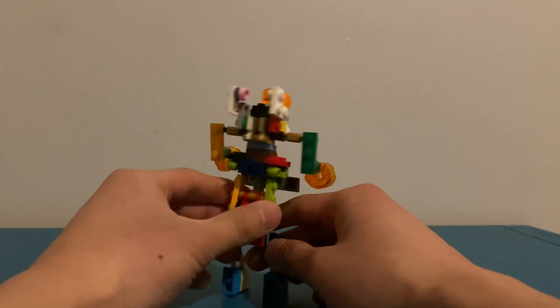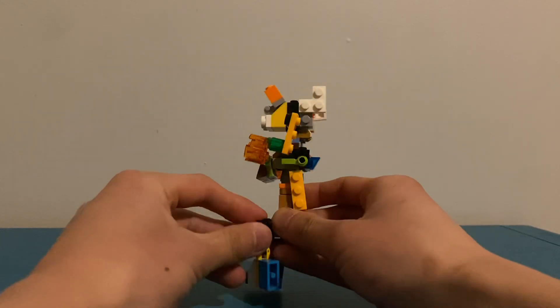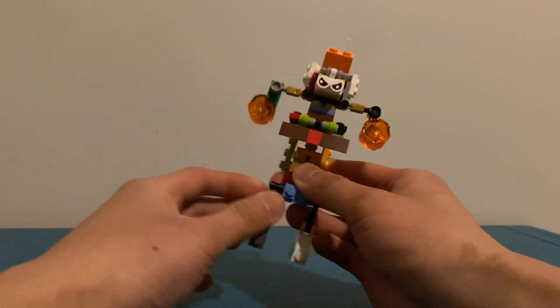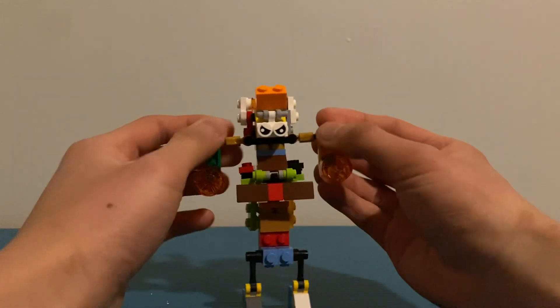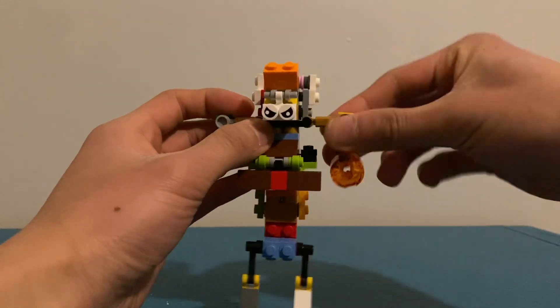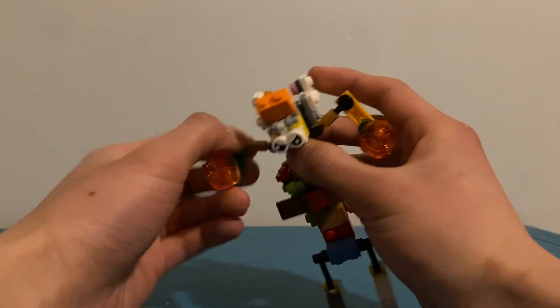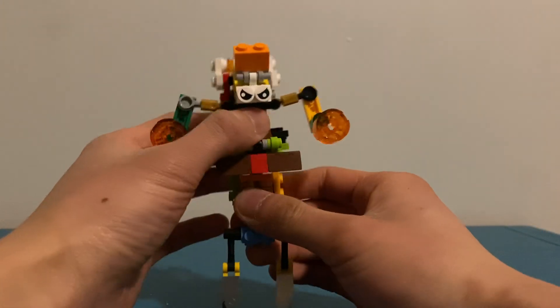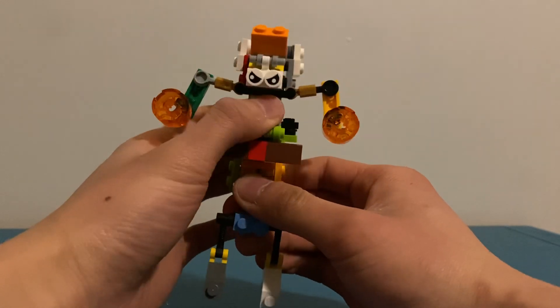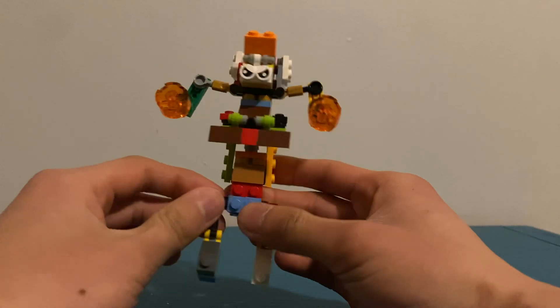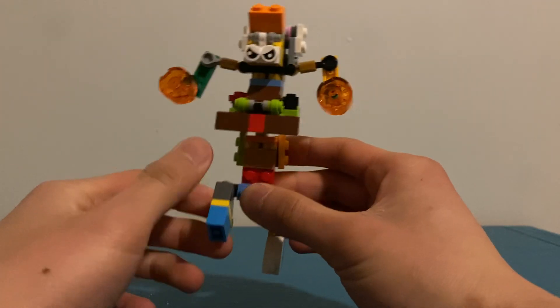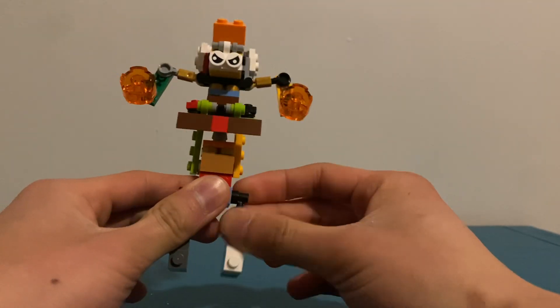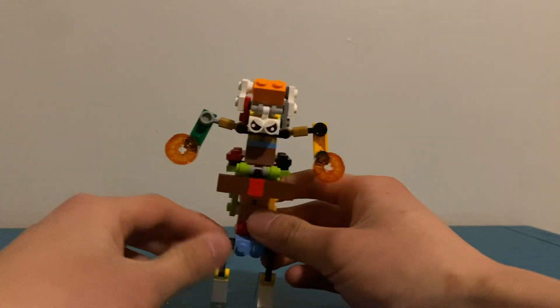To give it a little 360 here. Looks pretty tall. For articulation, he can move his arms. He's got a waist swivel. Which is ironic, because neither of them had a waist swivel. And, of course, the legs can move. And that's it. It can't rotate the head.